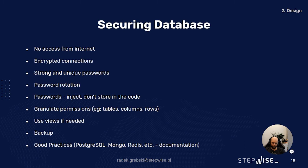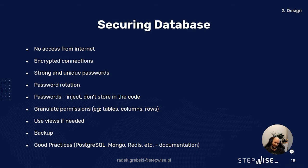We should granulate permissions — for example, if possible, give access only to specific tables, columns, or rows to provide minimal required permissions for each user. If we cannot restrict a user's table access, we can use views to limit the data shown. We should also back up our database or any other external storage system and, on a regular basis, test the restore procedure — not only have the backup. Databases also have their own good practices in their documentation, so if you use Postgres, Mongo, Redis, or anything else, check the documentation for security best practices.